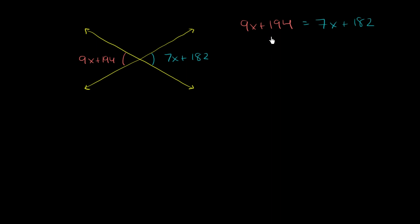And now we just have to solve for x. So if we want all the x terms on the left-hand side, we could subtract 7x from here. We've got to do it to both sides, of course, in order to maintain the equality. And then we could put all of our constant terms on the right-hand side. So we can subtract 194 from the left. We have to subtract 194 from the right in order to maintain the equality.